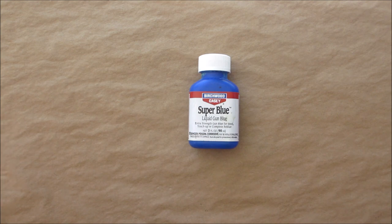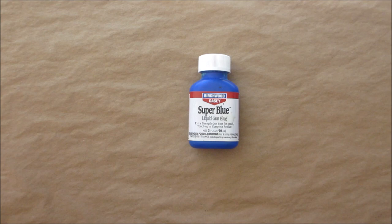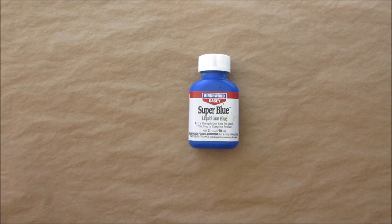There's different ways of bluing things. When you see a nice blue firearm, usually that's done with rust bluing or with bluing salts. It's a pretty involved process, it's considered hot bluing, and it definitely is a more durable finish.